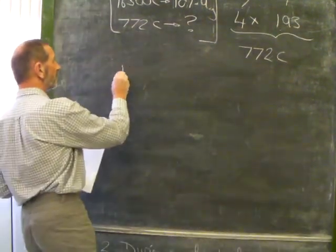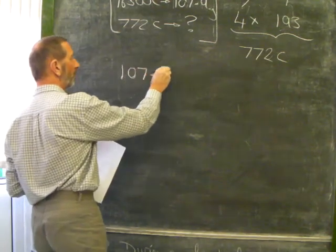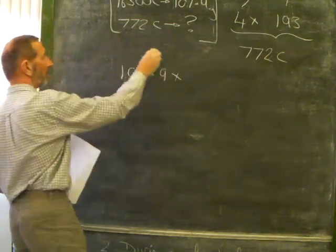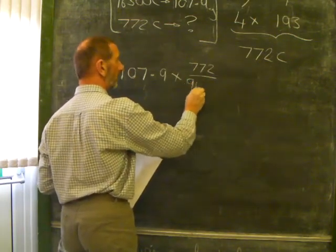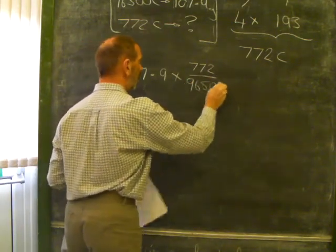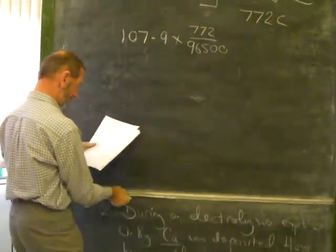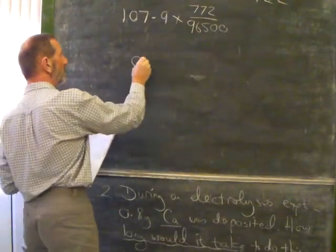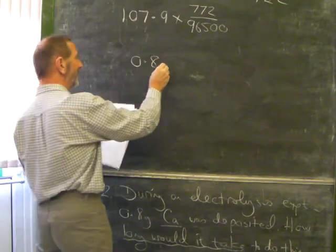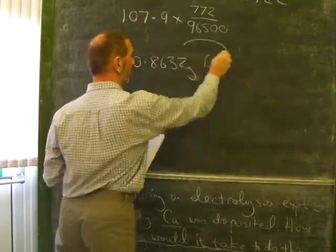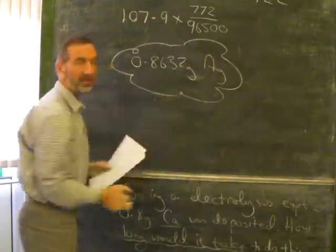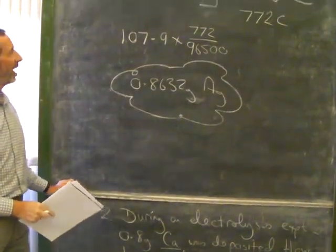So we take the mass of silver, 107.9, and make it smaller by putting the smaller number on top and the larger number below. And if we do this particular sum, the answer comes to 0.8632 grams of silver. That's a fairly simple, straightforward calculation.